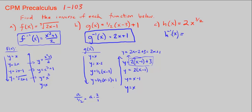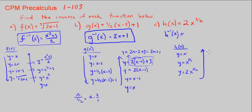Now we're on part c, h(x). How do we create that? We start with y equals x, then we take x to the power of 3 over 2, giving y equals x to the 3/2. Then we multiply by 2. That's how we wrapped h(x).